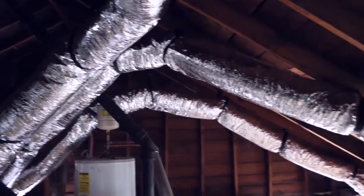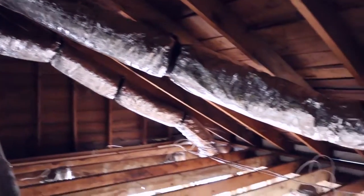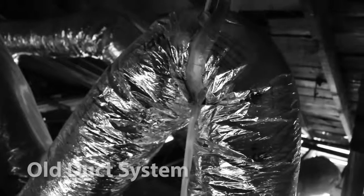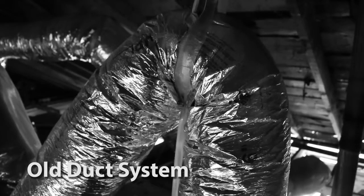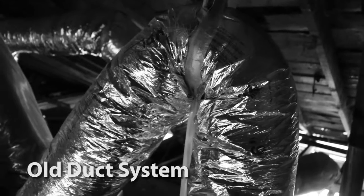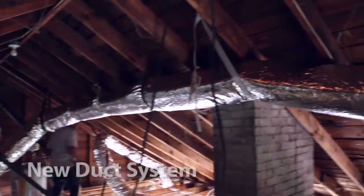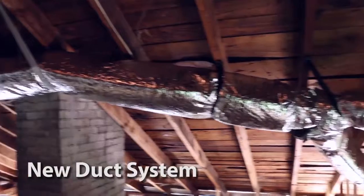One way to think about ductwork is almost like your garden hose. When you bend it too sharply, what happens to the water flow? It shuts off. Airflow through a duct is very similar. You want to make sure that you're getting the air out at the end of that duct.